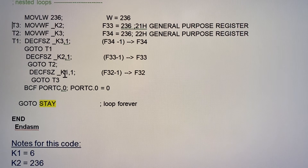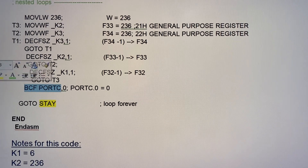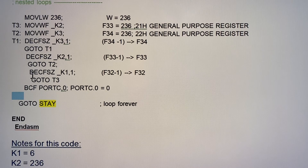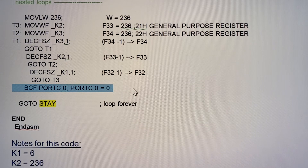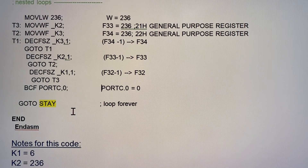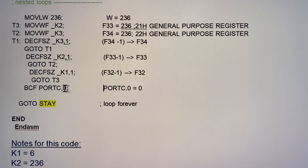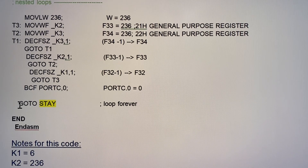Once k1 (file 20h) reaches zero, the code exits the loop. Because the decrement skip-if-zero detects it is zero, it skips and jumps to the next instruction, which clears port C bit zero — so RC0 goes to zero. This ends the pulse. Then we tell the micro to go to label 'start' so it goes back to the beginning and waits for the user to press RB4 again.